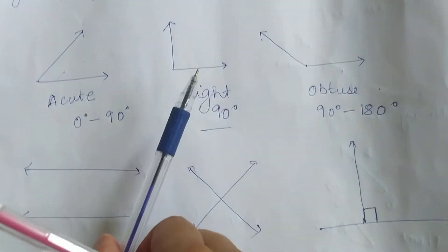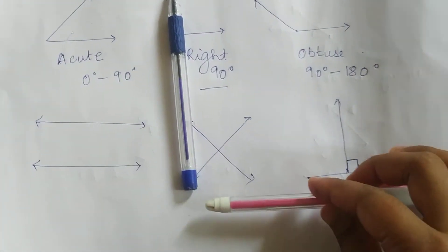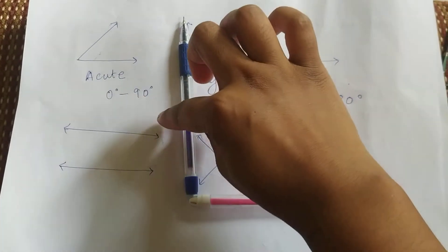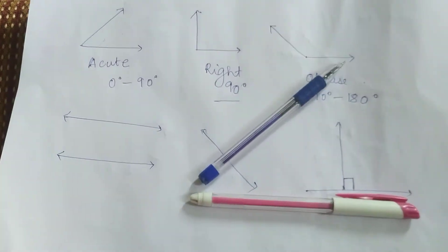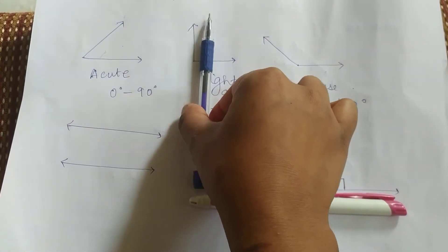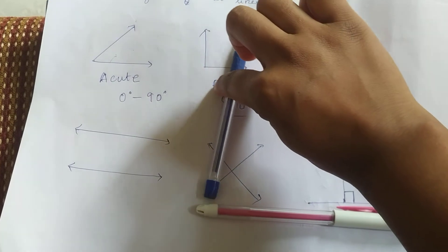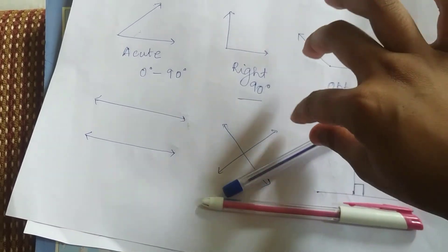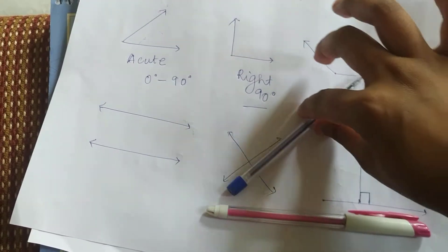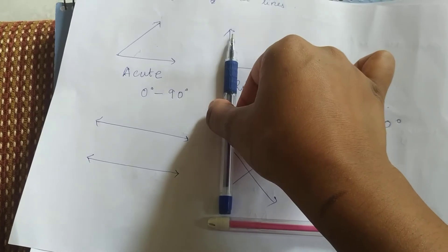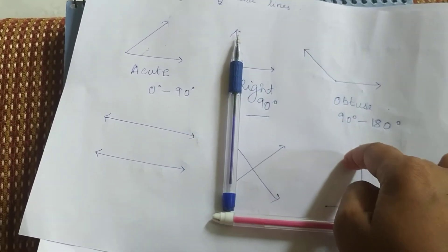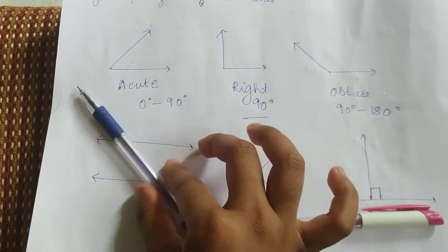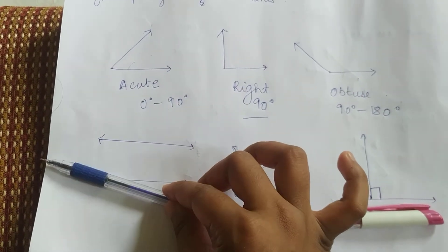Acute angle is from zero degrees to 90 degrees, less than 90 degrees. Right angle is exactly 90 degrees. And obtuse angle is 90 degrees to 180 degrees. So these are the three types of angles. Let's see how they look. Like this, this is 90 degrees. These two pens make 90 degrees. If it's smaller than this, that is acute angle.